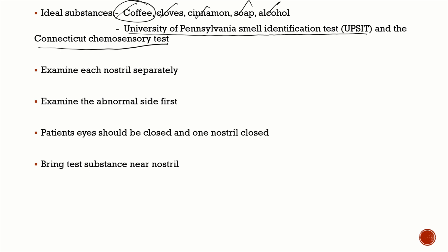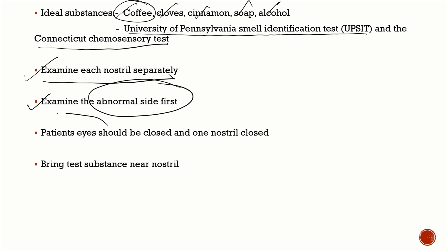Remember to examine each nostril separately. Close one nostril, the patient's eyes should be closed, and examine the side you're expecting to be abnormal first, then examine the normal side. Bring the test substance near the nostril and ask the patient whether they are able to identify the odor. Key points: examine each nostril separately, examine the abnormal side first, patient's eyes should be closed, one nostril closed, and ask the patient to identify the smell.